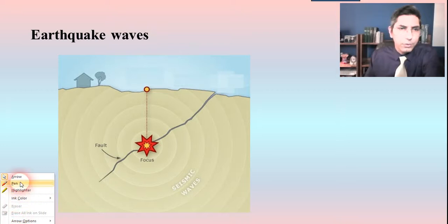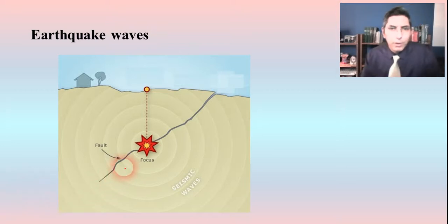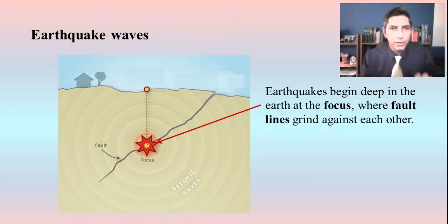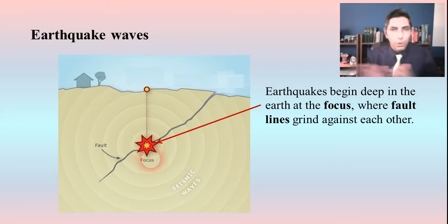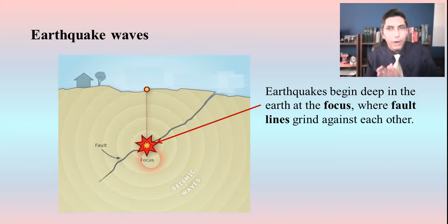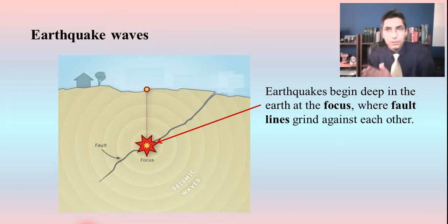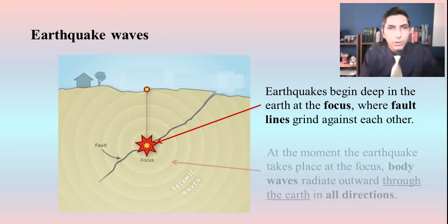Here's a simple diagram of how that works. Earthquakes actually begin deep in the earth, and the point at which the earthquake starts is called the focus — that's the actual beginning point of an earthquake. At the focus there are fault lines, fissures or cracks in the earth's crust that are grinding against each other. When that happens, it releases a huge amount of energy — almost unimaginably large — as those faults grind against each other.